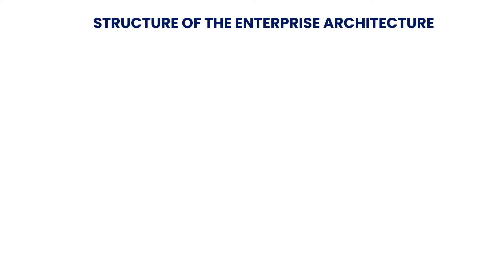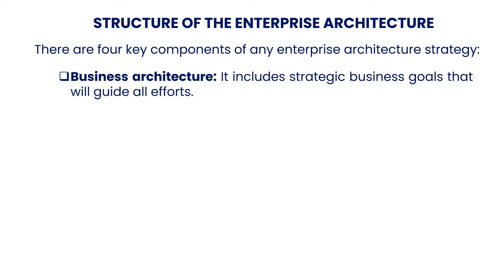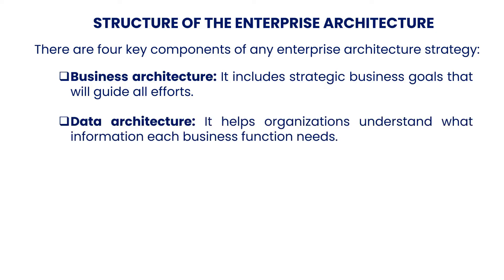Now let's learn the structure of the enterprise architecture. There are four key components of any enterprise architecture strategy. The first step in creating an enterprise architecture strategy includes strategic business goals that will guide all efforts. Data architecture helps an organization to understand what information each business function needs.